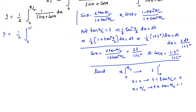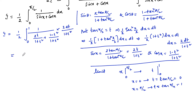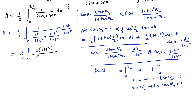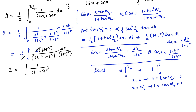So I = (1/2) ∫₀¹ 1/[2t/(1+t²) + (1−t²)/(1+t²)] · 2dt/(1+t²). Simplifying, the (1+t²) terms cancel, giving I = ∫₀¹ 1/(2t + 1 − t²) dt, i.e., ∫₀¹ 1/(2t − t² + 1) dt.